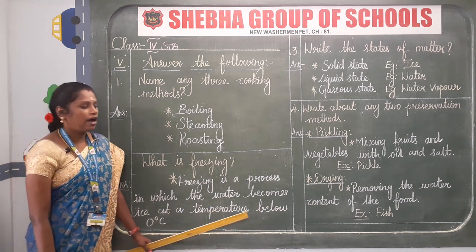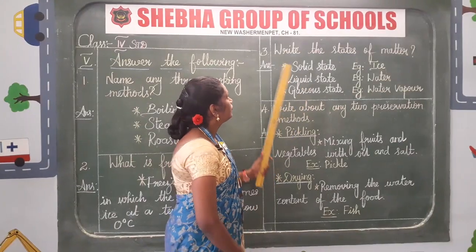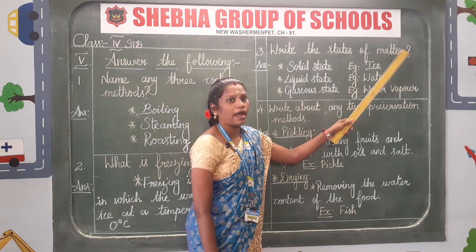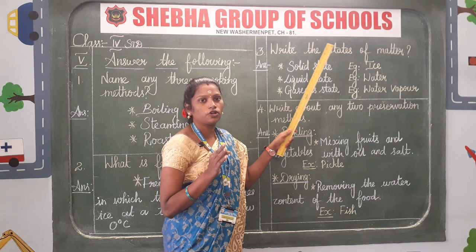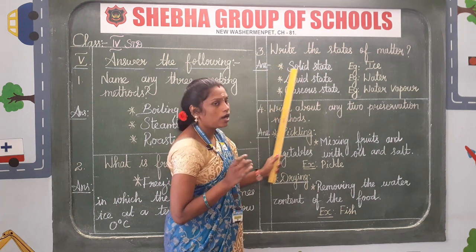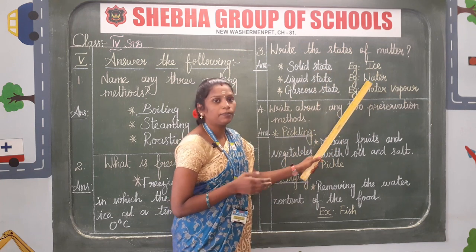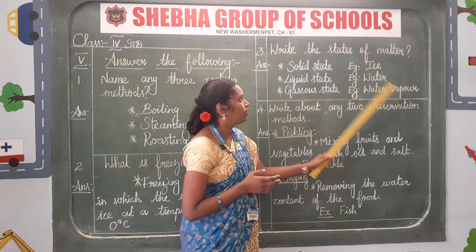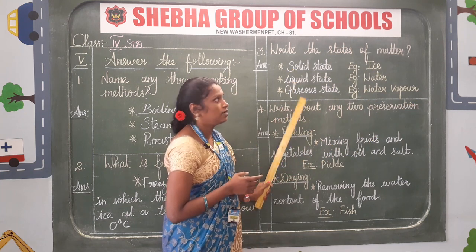After finishing this, draw a line using scale and pencil. Then third question: write the states of matter. The 3 states are solid, liquid, and gaseous.